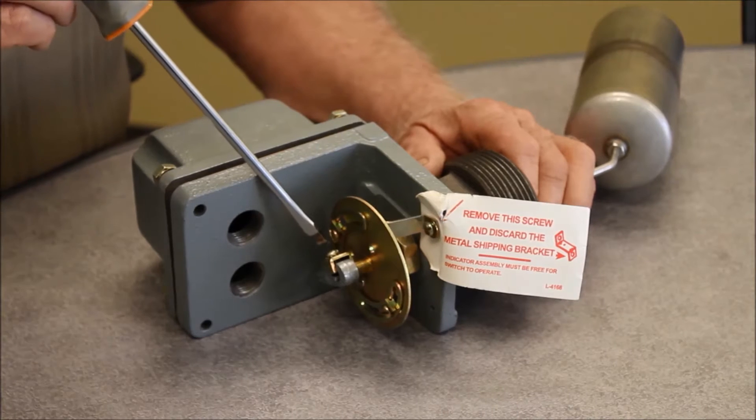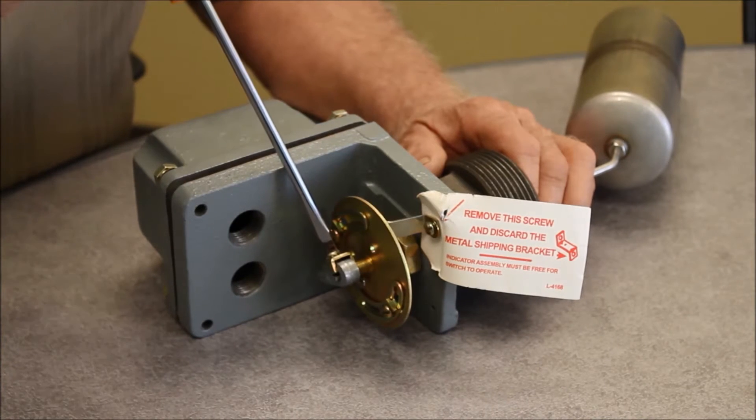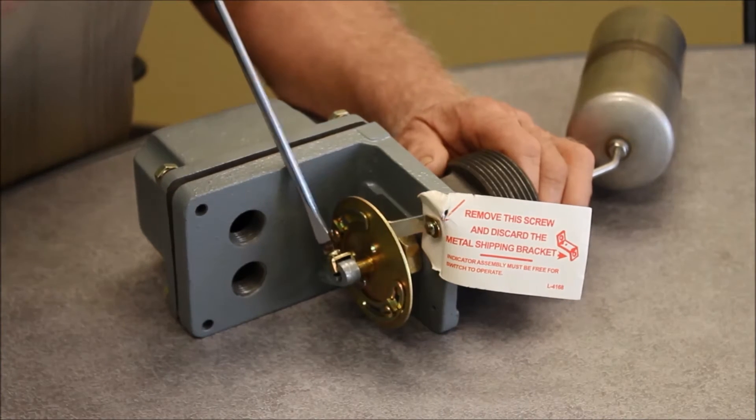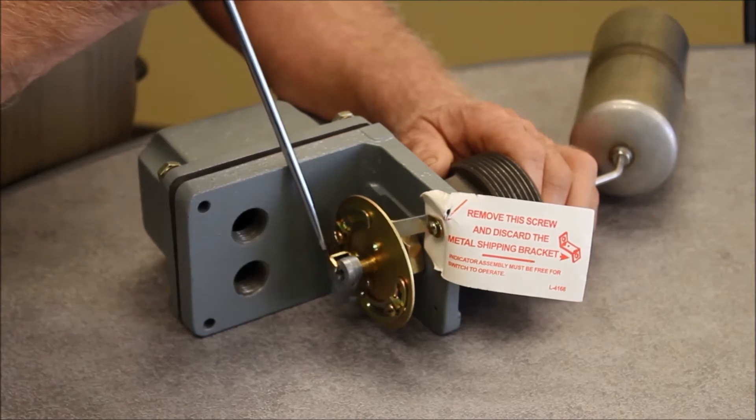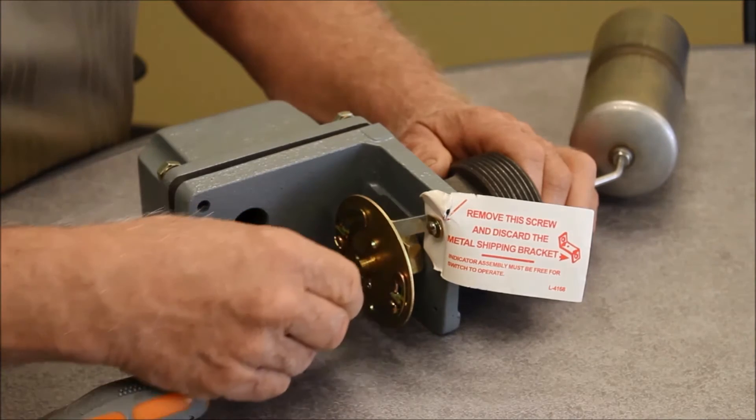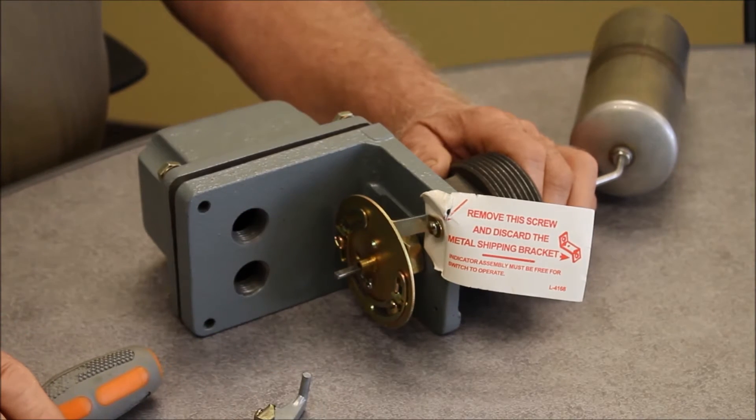To replace the seal, the first step is to remove the indicator from the outside of the tank. Loosen the set screw that holds the clamp and the indicator to the shaft. Remove the indicator and the clamp.